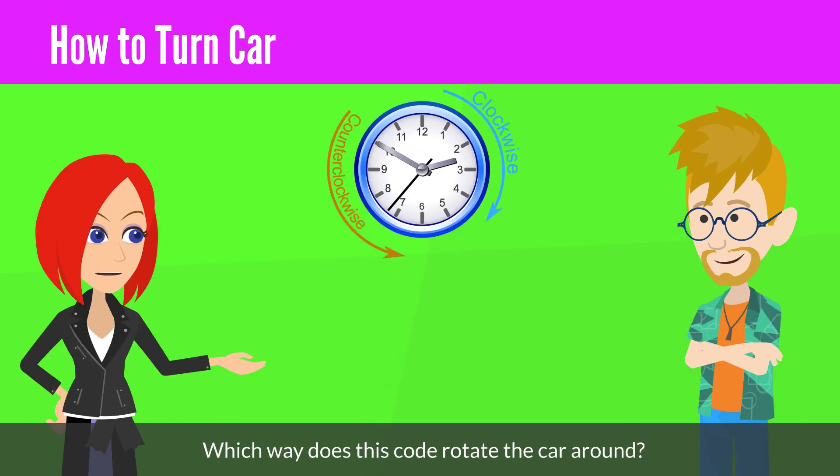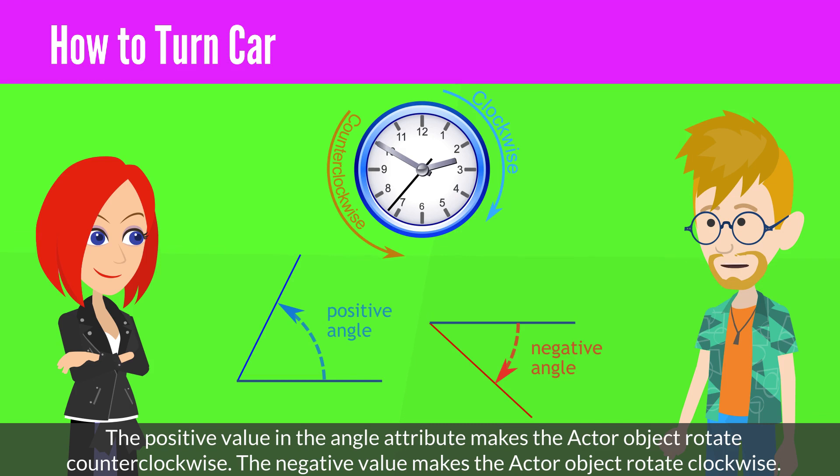Which way does this code rotate the car around? The positive value in the angle attribute makes the actor object rotate counterclockwise. The negative value makes the actor object rotate clockwise.